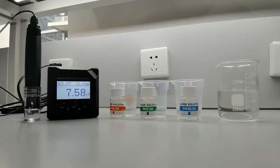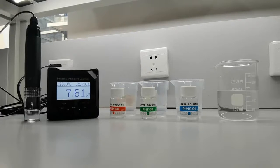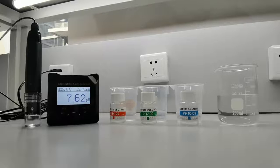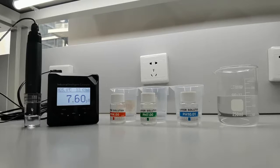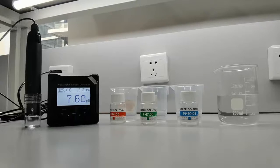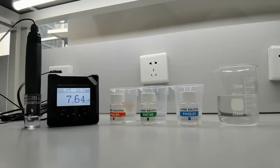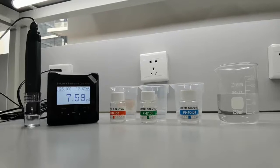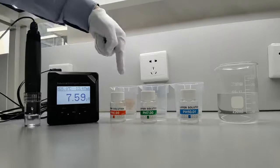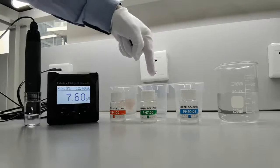In this video, we will learn how to calibrate Supmea's pH meter with plastic sensor. The parts of the pH meter include the controller and plastic sensor. The pH meter should be calibrated using colored buffer standard solutions of pH 4, pH 7, and pH 10.